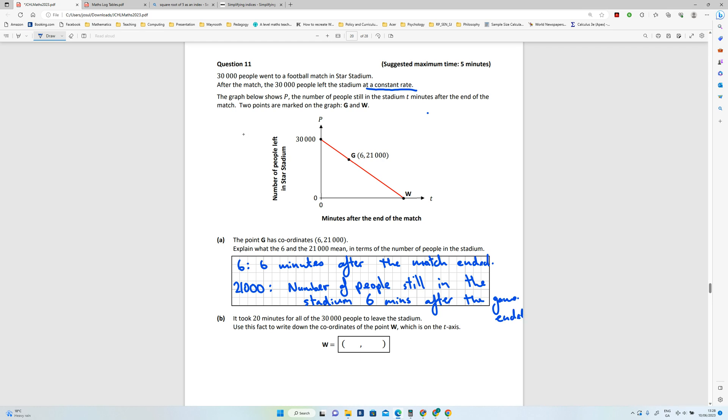Okay, probably could have written all of that in one line, but that's still okay. Part B: It took 20 minutes for all of the people to leave the stadium. Use this fact to write down the coordinates of the point W. So W is going to be 20 minutes - that's the x-coordinate there.